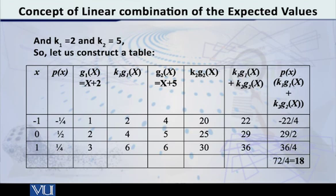And if I multiply this with k1, k1 is equal to 2. So let me make that column, k1 into g1(x). So 2 into all these numbers. What do I get? 2 times 1 is 2, 2 times 2 is 4 and 2 times 3 is 6. So the numbers are 2, 4 and 6.